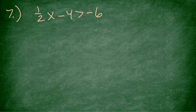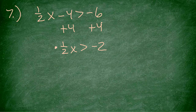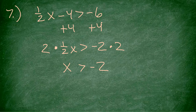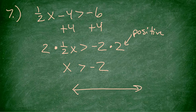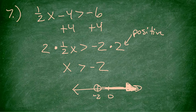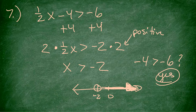Number 7: one-half x minus 4 is greater than negative 6. I add 4 to start, getting one-half x is greater than negative 2. To get rid of the fraction I multiply both sides by 2, giving positive x is greater than negative 2. I didn't flip because I multiplied by a positive. Number line: negative 2, open circle, shade to the right. I check 0: one-half times 0 minus 4 is negative 4, which is greater than negative 6. Yes.